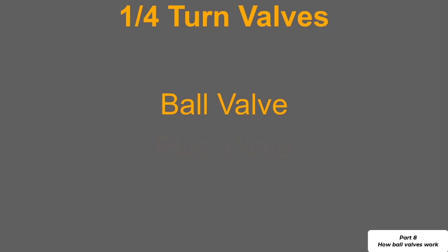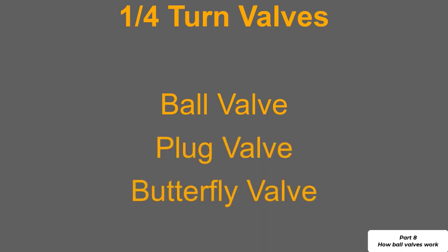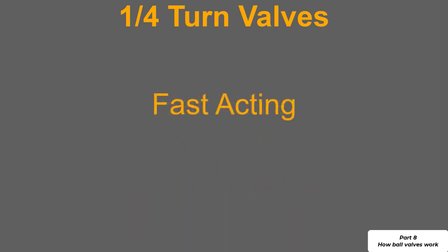Other valves at a quarter turn would include the plug valve and the butterfly valve. As with all quarter turn valves they are quite quick to operate. You can install a gearbox on the top, a planetary type gearbox, although this means you'll slow down the actuation speed of the valve or what they refer to as the response time.